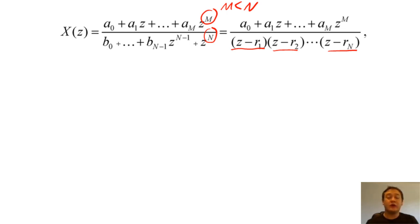When we rewrite X of Z into this form, we can break X of Z down into a sum of fractional components.